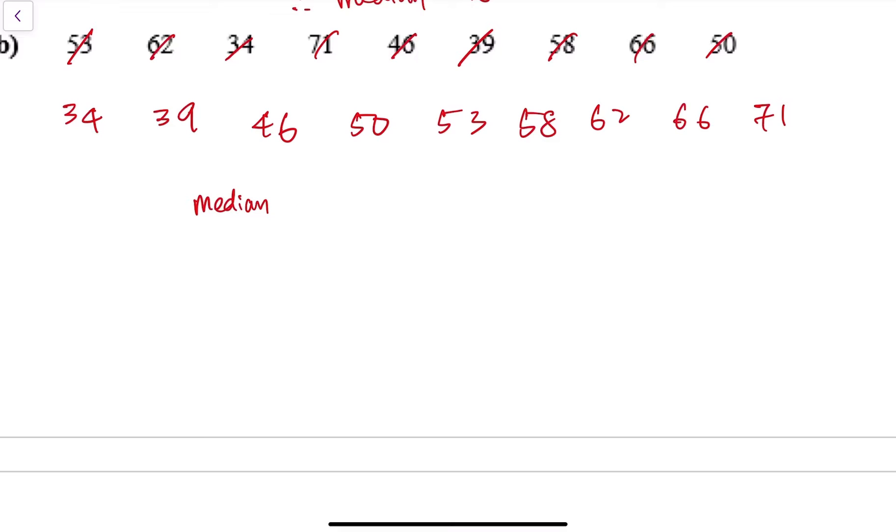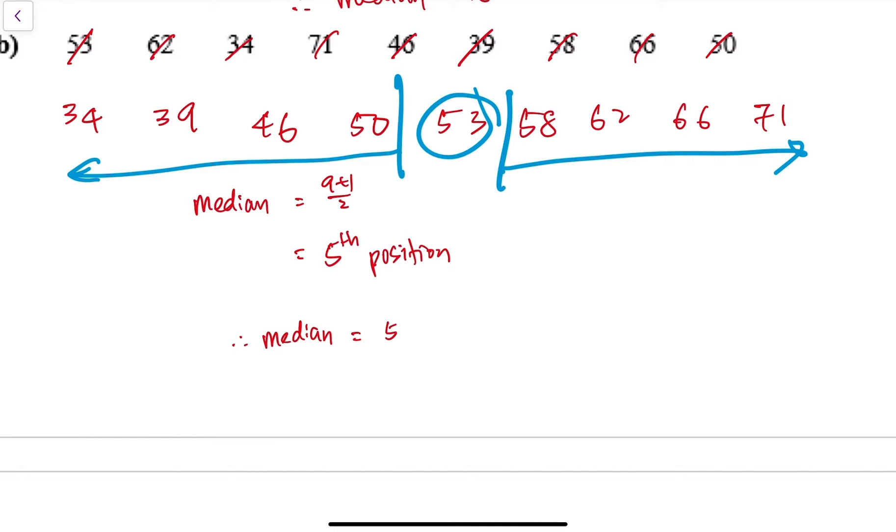And therefore, our median will be equal to nine plus one over two. It is a number in the fifth position. So let's see, one, two, three, four, five, number in the fifth position. You count here, there are four, you count here, there are four. So my median is correct. So therefore, my median is equal to 53.